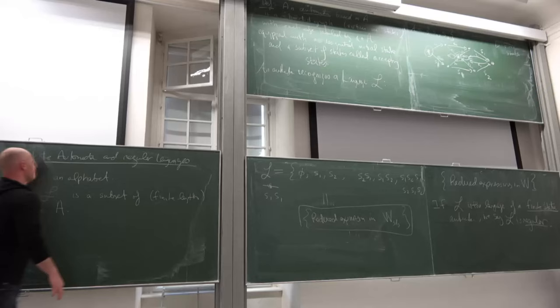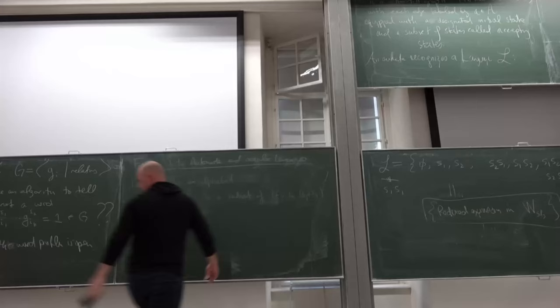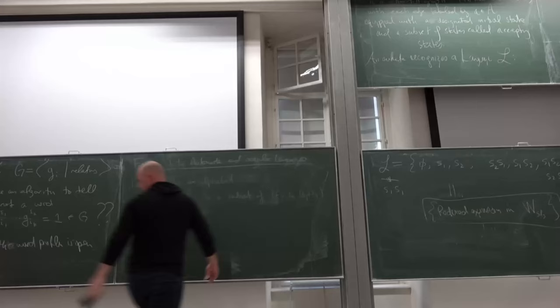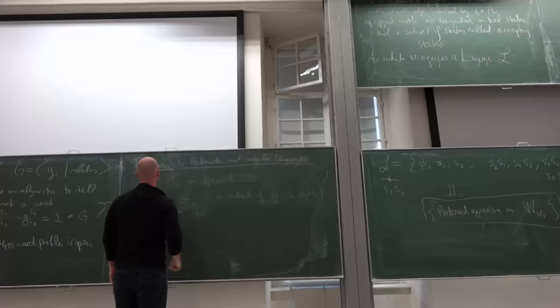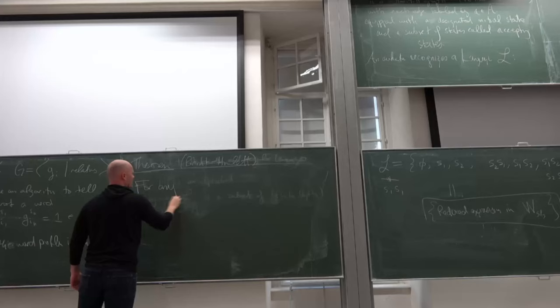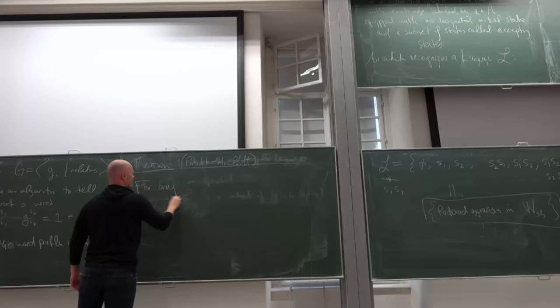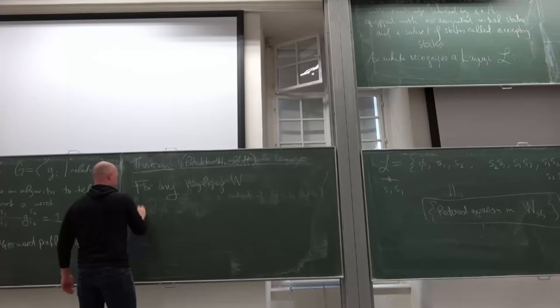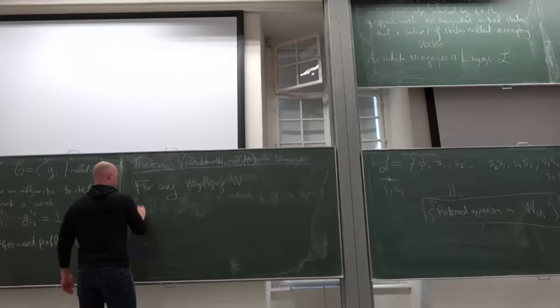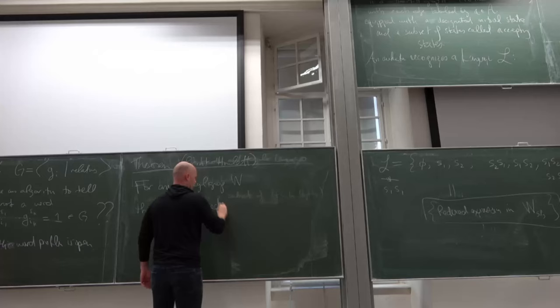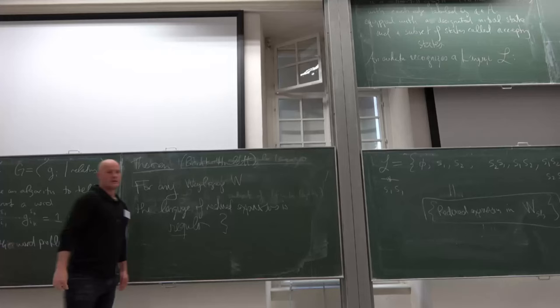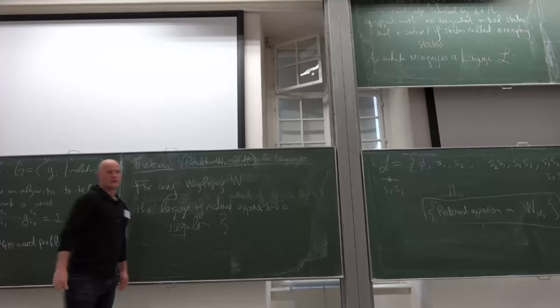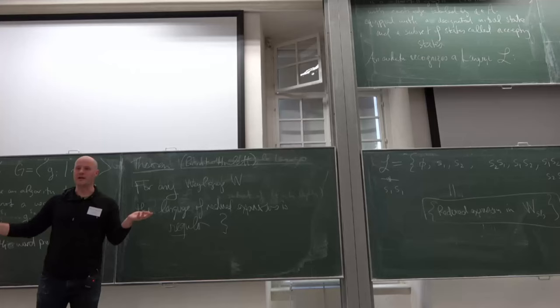Here is a deep theorem — Brink and Howlett. For any Kac-Moody Weyl group W, actually for any Coxeter group, the language of reduced expressions is regular. Whatever Coxeter group you're studying, the words in the generators which are reduced expressions are recognized by a finite state automaton.